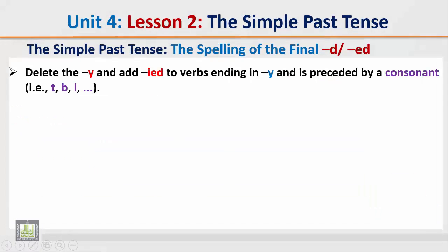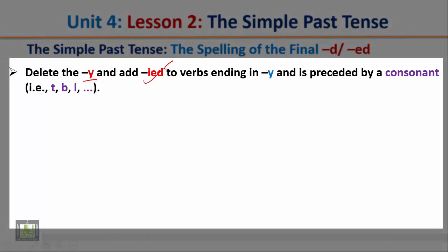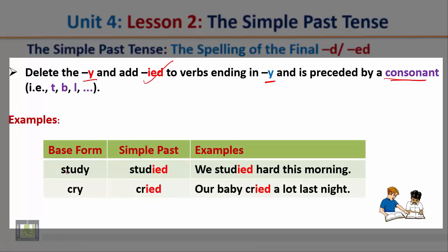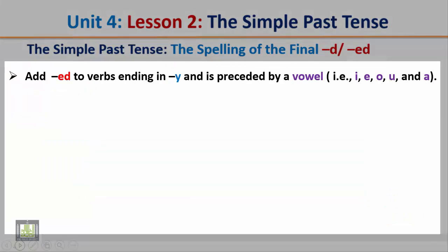Rule 3: delete the -y and add -ied to verbs ending in -y that are preceded by a consonant. For example, 'study' ends in -y and is preceded by the consonant -d, so delete the -y and add -ied: 'We studied hard this morning.' Similarly, 'cry' ends in -y preceded by the consonant -r, so delete the -y and add -ied: 'Our baby cried a lot last night.'